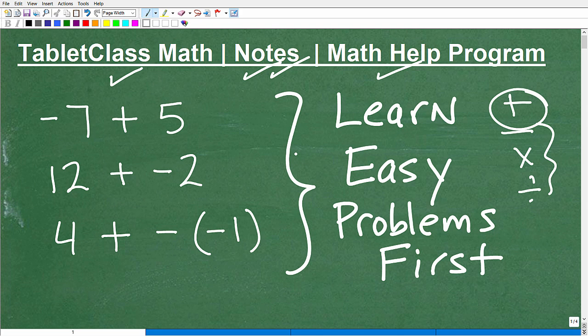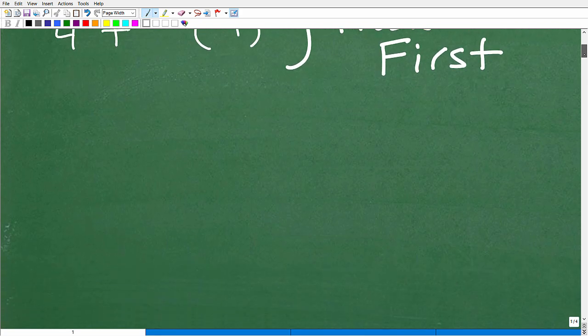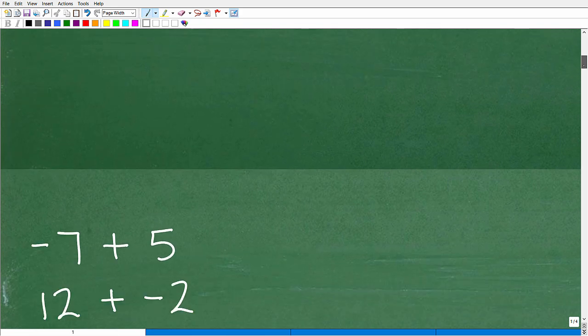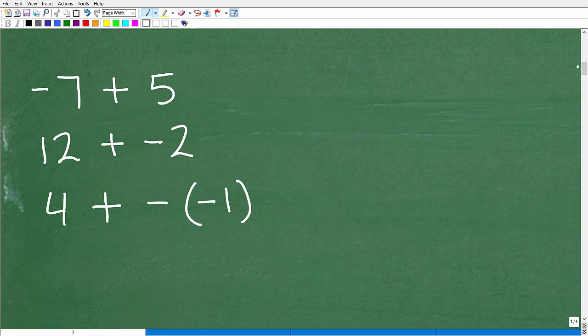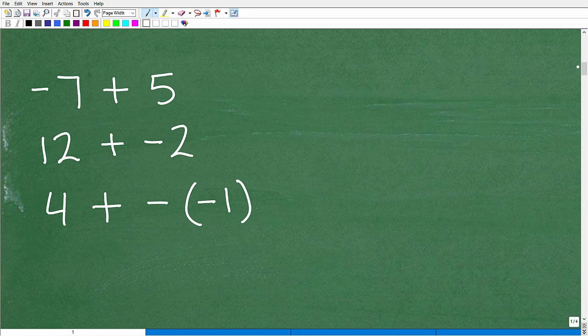So here we go. We have three problems. Let's just do these three easy problems. And if they're not easy for you right now, I think by the time we finish this little video, they will become easy. Let's just focus on adding these positive and negative numbers. This is a negative 7, this is a positive 5, this is a positive 12, this is a negative 2. We just want to add these up.